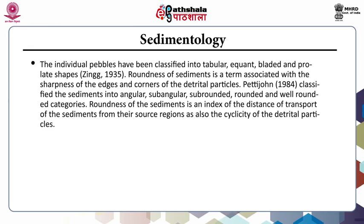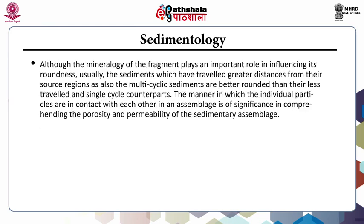Roundness of sediments is a term associated with the sharpness of the edges and corners of the detrital particles. Pettijohn classified the sediments into angular, subangular, subrounded, rounded, and well-rounded categories. Roundness of sediments is an index of the distance of transport of the sediments from their source regions, as also the cyclicity of the detrital particles. Although the mineralogy of the fragments plays an important role in influencing its roundness, usually the sediments which have travelled greater distances from their source regions, as also the multi-cyclic sediments, are better rounded than their less travelled and single-cycle counterparts.